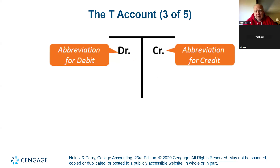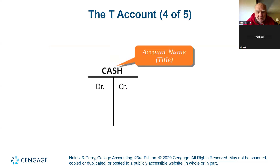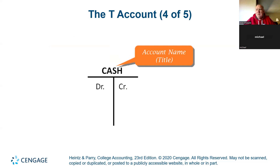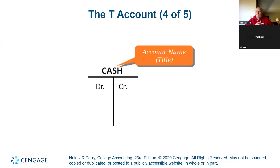The T-account: debit, credit, DR, CR. Every account in your chart of accounts is going to have a separate T-account — a separate account or folder in your general ledger. Cash is an account. Accounts receivable, accounts payable, inventory, rent expense — whatever the company wants to keep track of, they set it up in their chart of accounts. Cash always comes first.